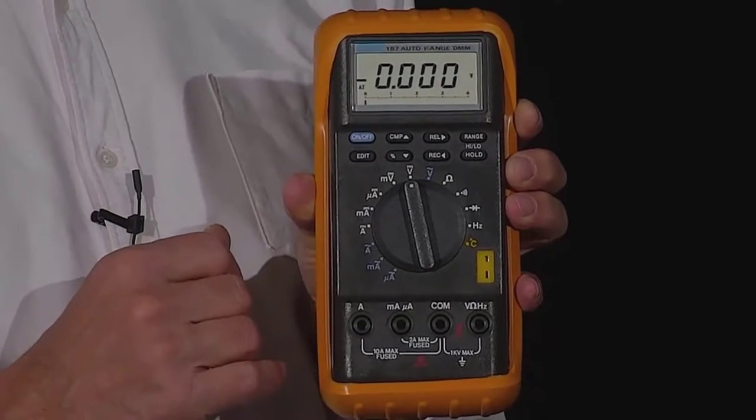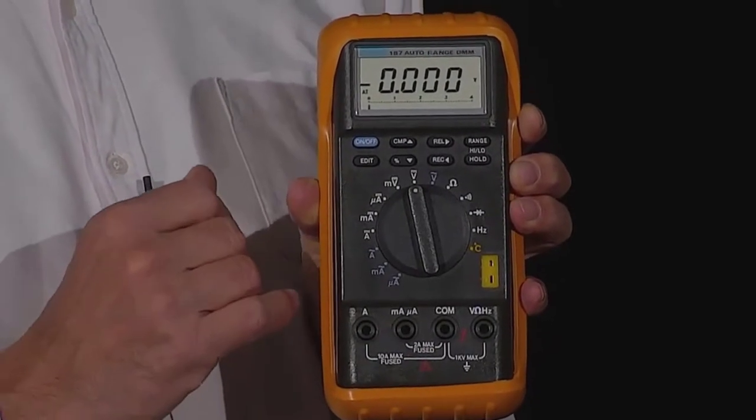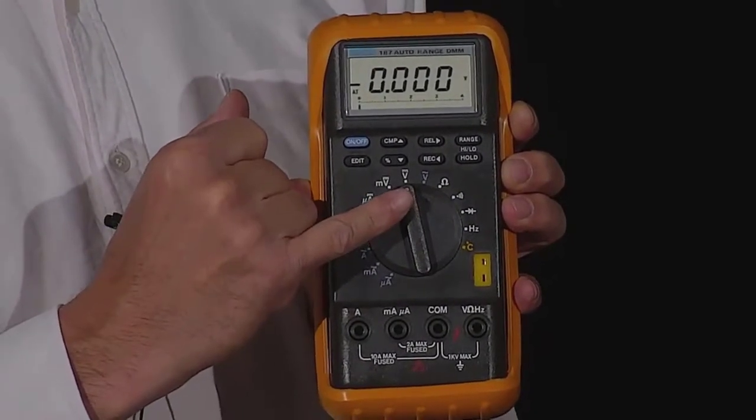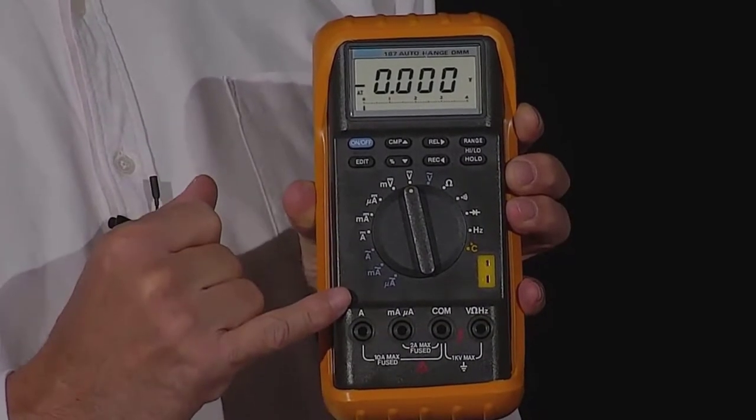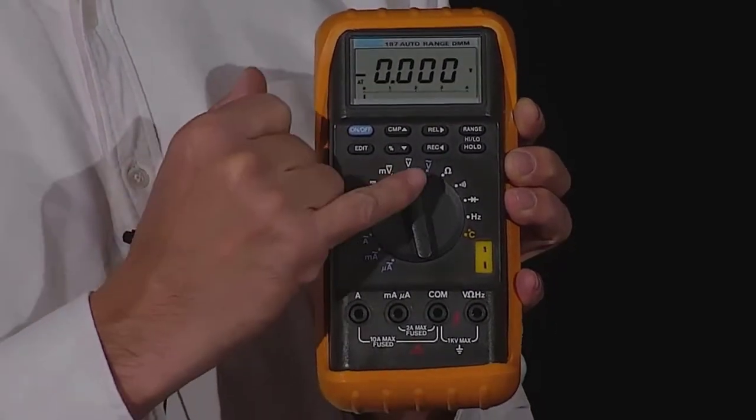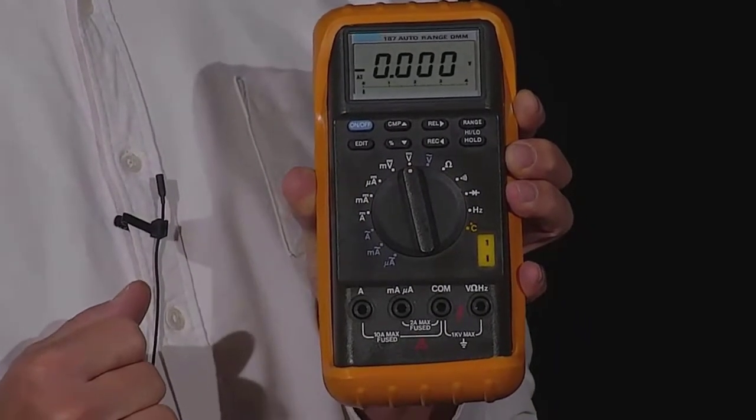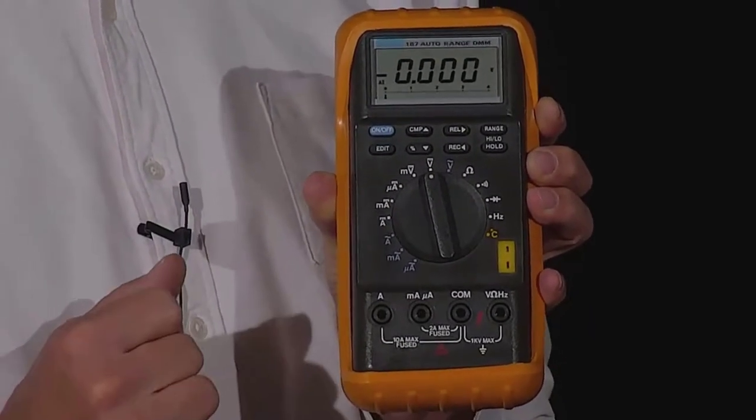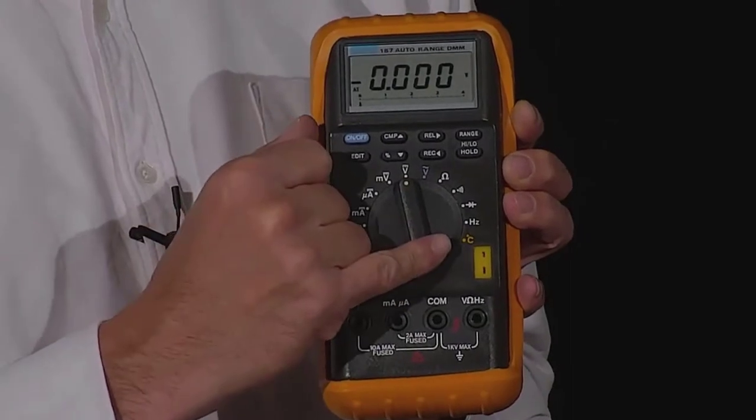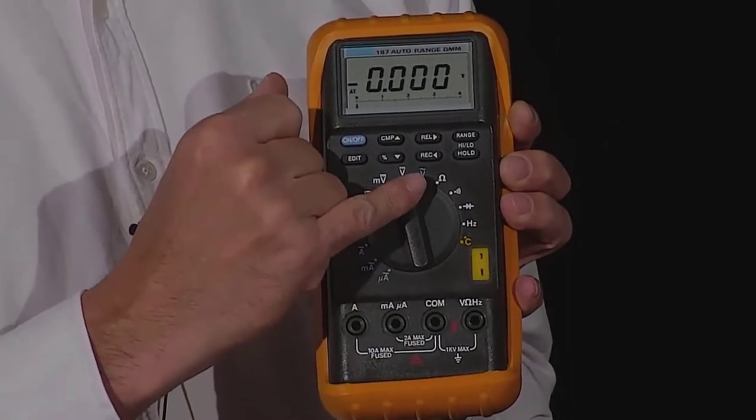A selector switch is used to set the desired measured variable and the measuring range. Measuring ranges for direct and alternating voltage or direct and alternating current often have a resistance range as well. Depending on the type, other physical quantities can be measured, such as temperature or frequency.